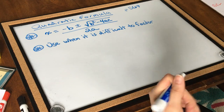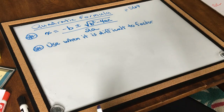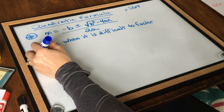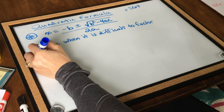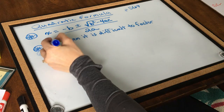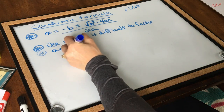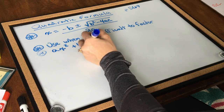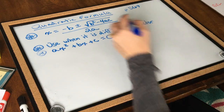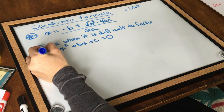Where do these a's, b's, and c's come from? They come from standard form. You have to have a quadratic in standard form, which means it's ax squared plus bx plus c equals zero. That's where our a's, b's, and c's come from.